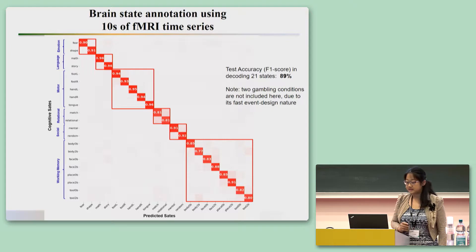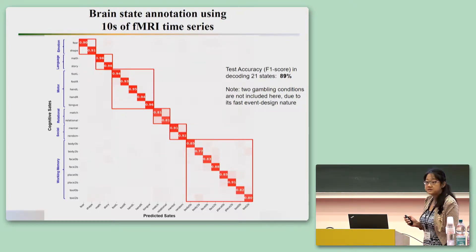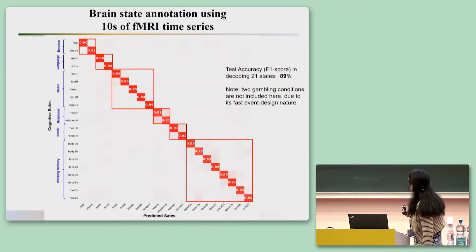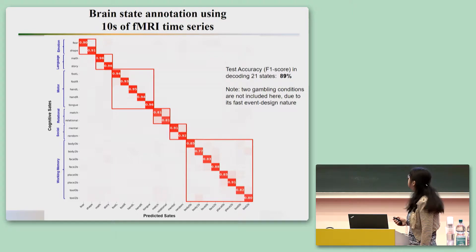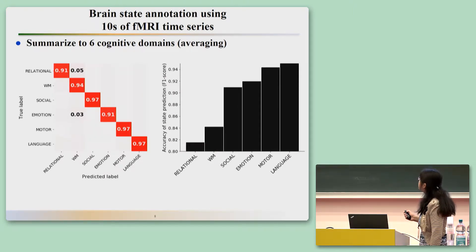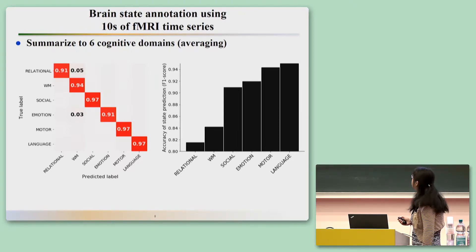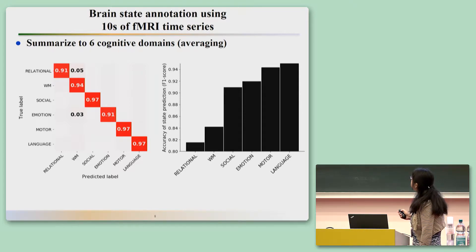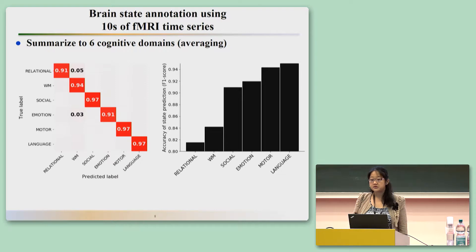We applied our model to this data and found that even using only 10 seconds of fMRI time series, prediction accuracy could reach as high as almost 90%. The confusion matrix shows how many samples were classified with the correct labels. Summarizing the large confusion matrix within each condition, all conditions are highly discriminable, but some misclassifications occur — for example, between the relational processing task and working memory task, because both involve visual pattern processing.